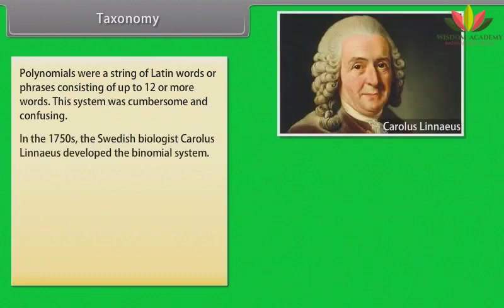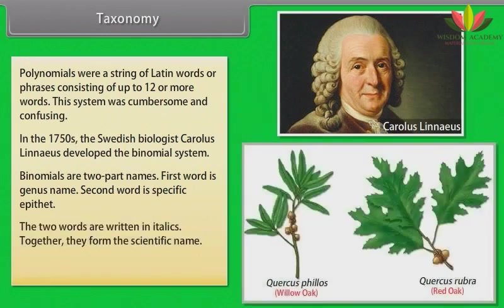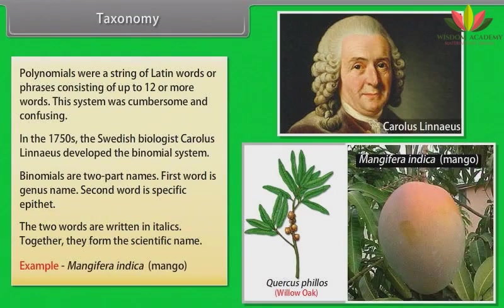In the 1750s, the Swedish biologist Carlos Linnaeus developed the binomial system. Binomials are two-part names: the first word is the genus name, the second word is the specific epithet. The two words are written in italics and together they form the scientific name. Example: Mangifera indica — Mango.